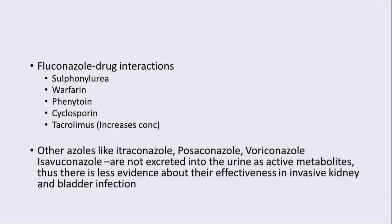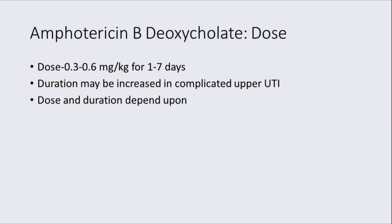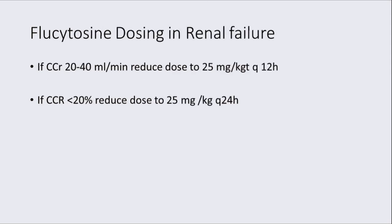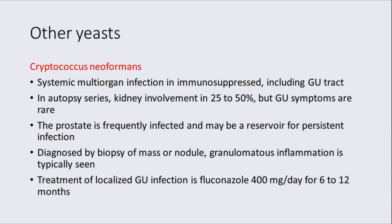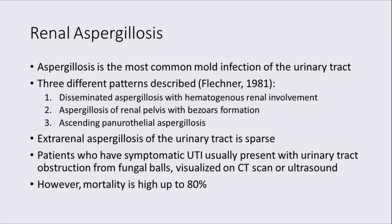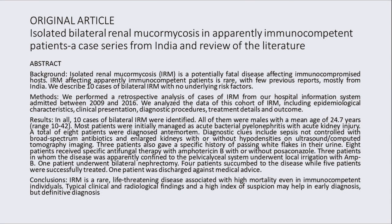For prescribing fluconazole, drug interactions should be kept in mind with common drugs like sulfonylurea, warfarin, phenytoin, cyclosporine, and tacrolimus. The doses for amphotericin B, flucytosine, and others along with renal dose modifications for fluconazole and flucytosine are noted. Other fungi such as Cryptococcus, Saccharomyces, molds, and renal Aspergillus are not elaborated here; they rarely affect the genitourinary tract but have very high mortality and should always be kept in mind. There is an original article published on isolated bilateral renal mucormycosis in apparently immunocompetent patients — a case series from India.